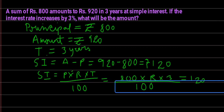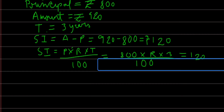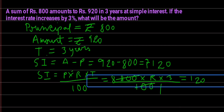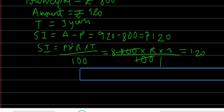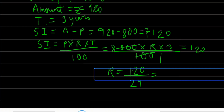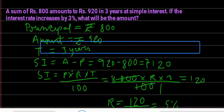Since SI is 120, and 800 into 3 is 2400, we get 24 after dividing by 100. So R equals 120 divided by 24, and since 24 into 5 is 120, R equals 5 percent.